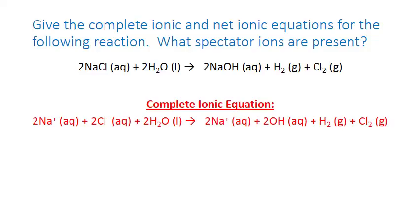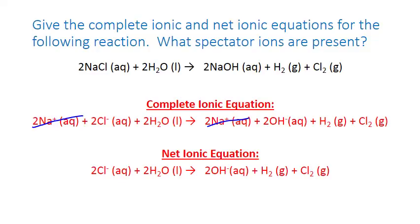To write the net ionic equation, we eliminate the spectator ions — those present in the same form on both sides of the arrow. The only spectator ion here is sodium (Na⁺). Eliminating sodium from each side gives us the net ionic equation: two chloride ions react with two water molecules to produce two hydroxide ions plus hydrogen gas (H₂) and chlorine gas (Cl₂). Sodium is identified as the spectator ion.